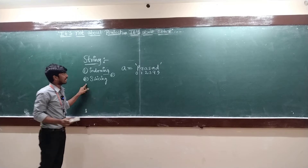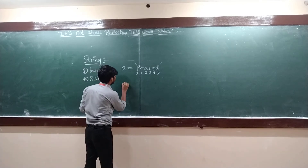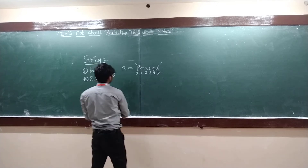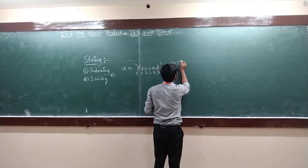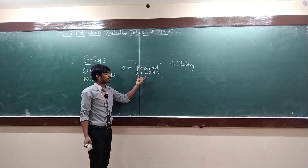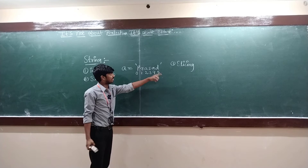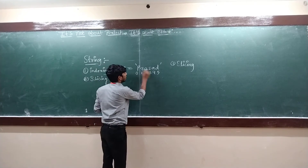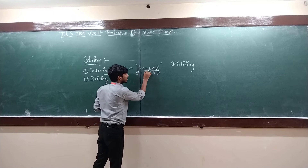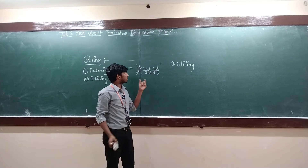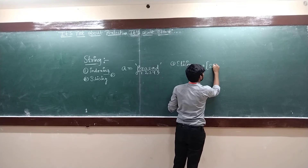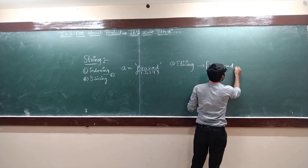After indexing, let's discuss slicing. We use slicing when we need certain characters from a string. For example, from Prasad, if you need the first three characters — PRA — or the last three characters, or the first, second, and fourth characters, we use the slicing method. In slicing, you specify a start, end, and step.